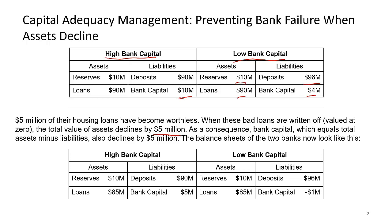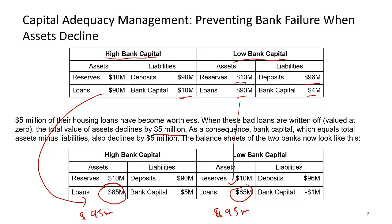For both banks, loans drop from $90 million to $85 million, making total assets $95 million each. Since deposits are obligations that cannot decrease, only bank capital can adjust. The high-capital bank's capital decreases from $10 million to $5 million. The low-capital bank, which started at $4 million, now has negative $1 million in bank capital.